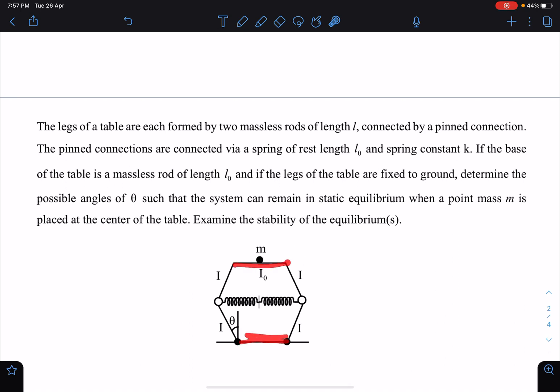This length is given as l naught, and if the legs of the table are fixed to the ground, so these points are fixed on the ground here. Determine the possible angle theta such that the system can remain in static equilibrium when a point mass m is placed at the center of the table. So when we place this mass, this length is given as l naught.